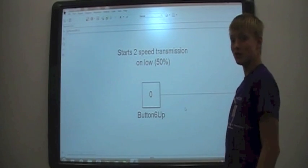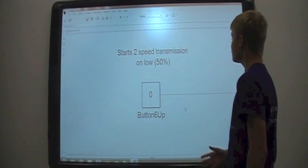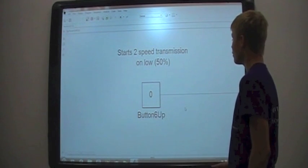Let's take a look at the E4P use programming. This block right here starts the two-speed transmission on a low of 50%.